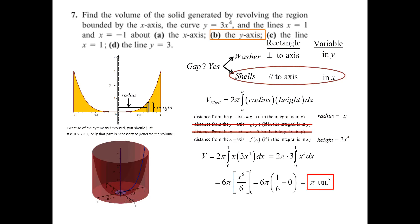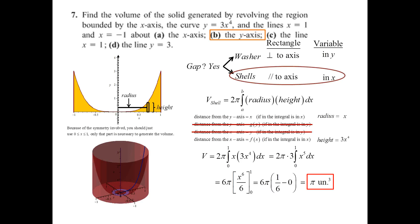This is the volume when you rotate around the y-axis. From the x-axis you got 2π for your volume; around the y-axis you got π. Kind of makes sense.